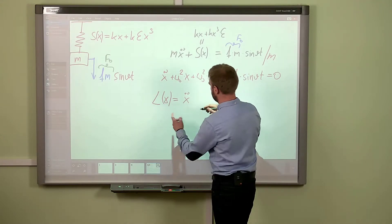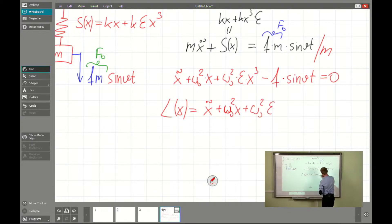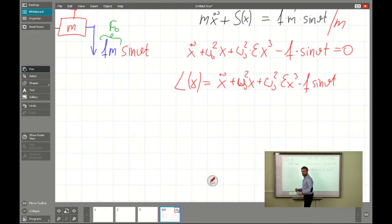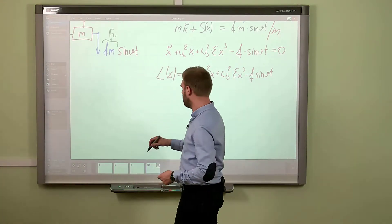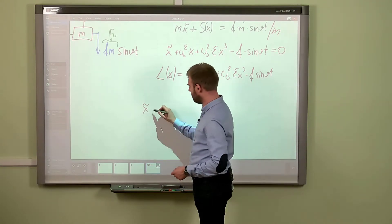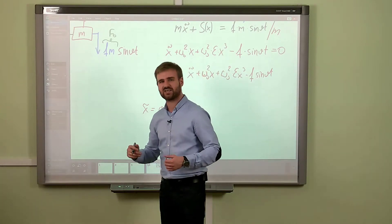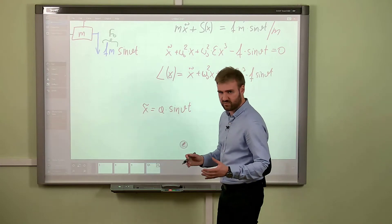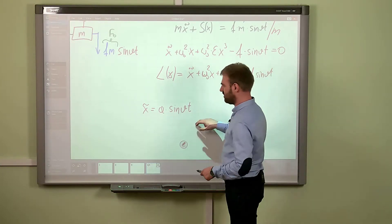We introduce such an operator given by exactly that formula, minus F·sin(νt). Now we can predict the solution. Due to the physical meaning, we predict the solution x̃ will be given by a·sin(νt) — the same frequency as the excitation — because typically, if a system is excited at some frequency, the response has the same base period.